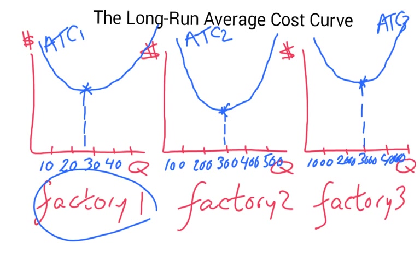Now, in the long run, a business has a choice. We can go with factory one and not produce as much, and then our quantity will be around 30. Our best situation would be we have our average total cost at this particular level, a certain number of dollars. Or we can go with factory two, and that could be a choice also in the long run.